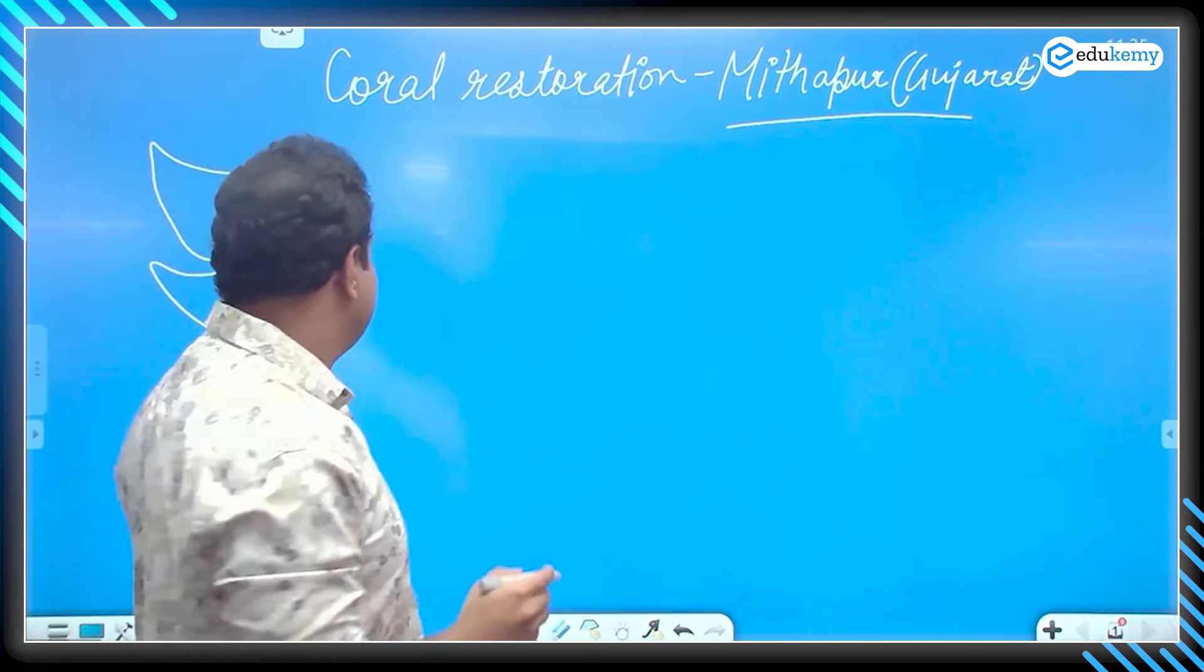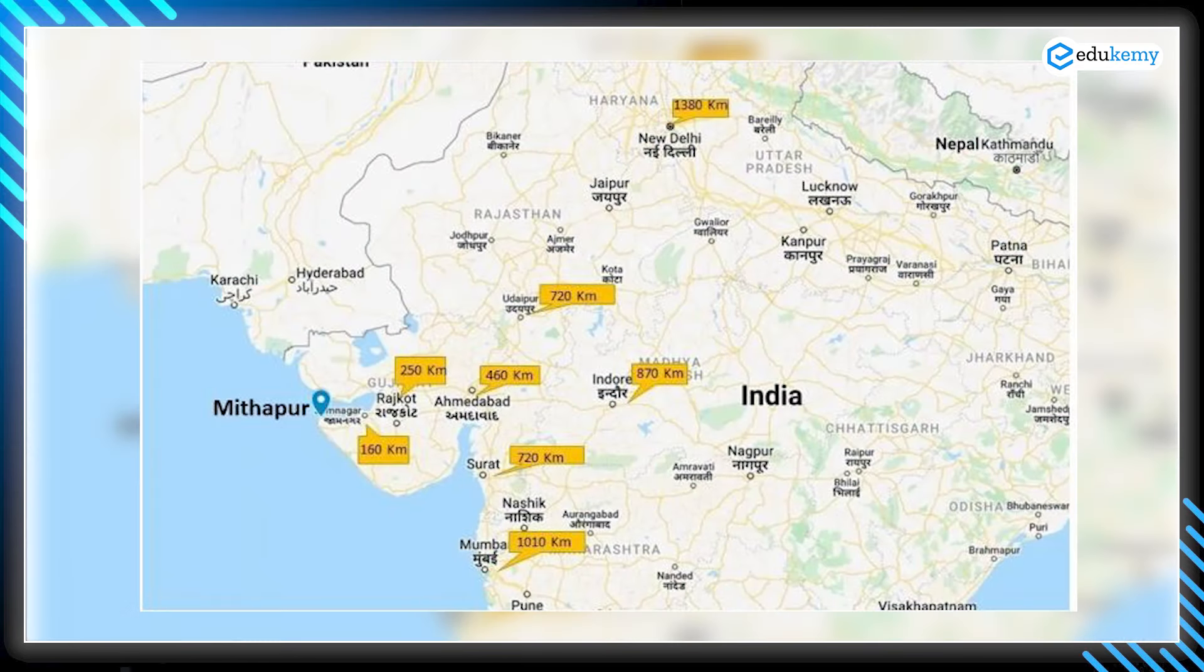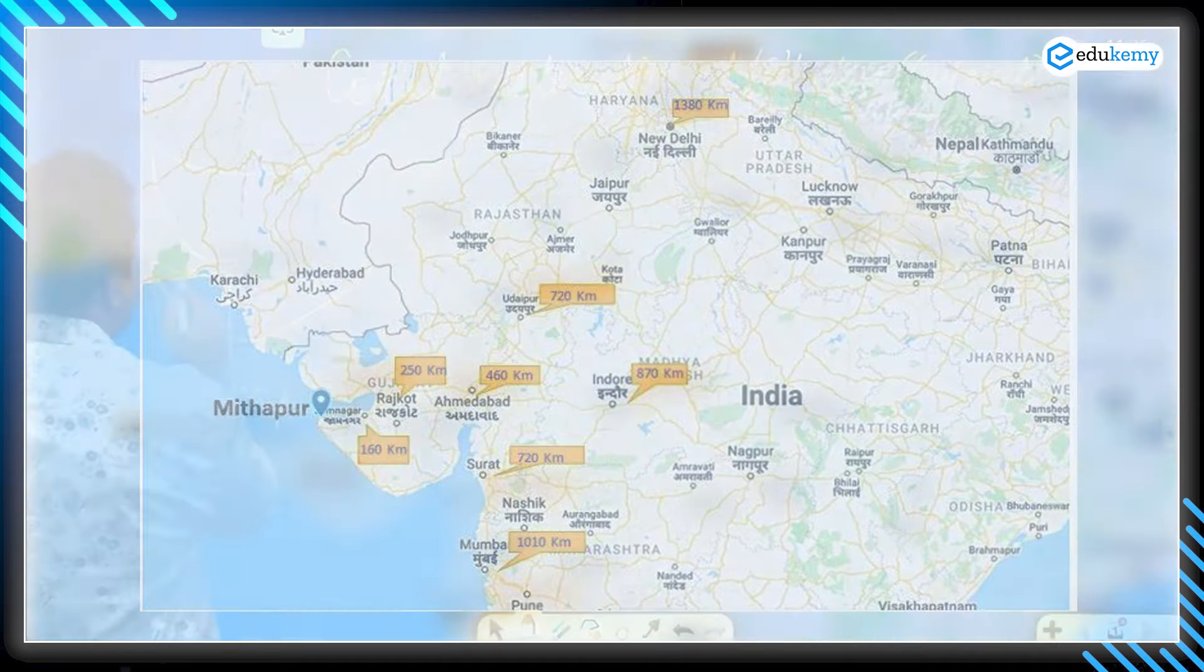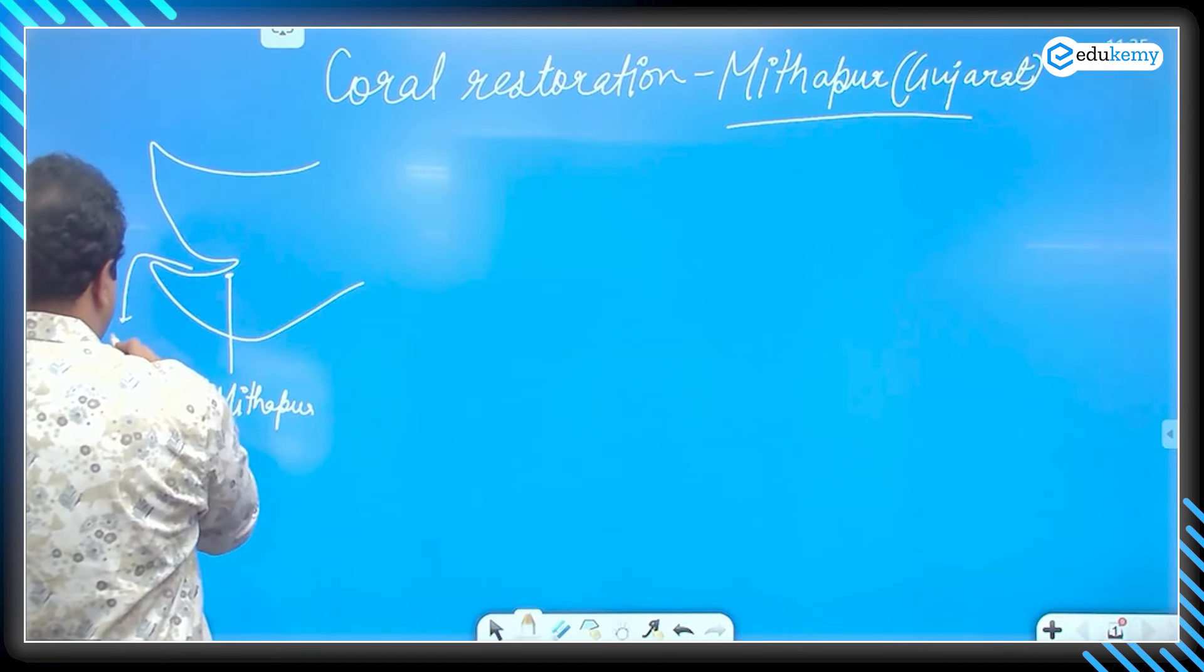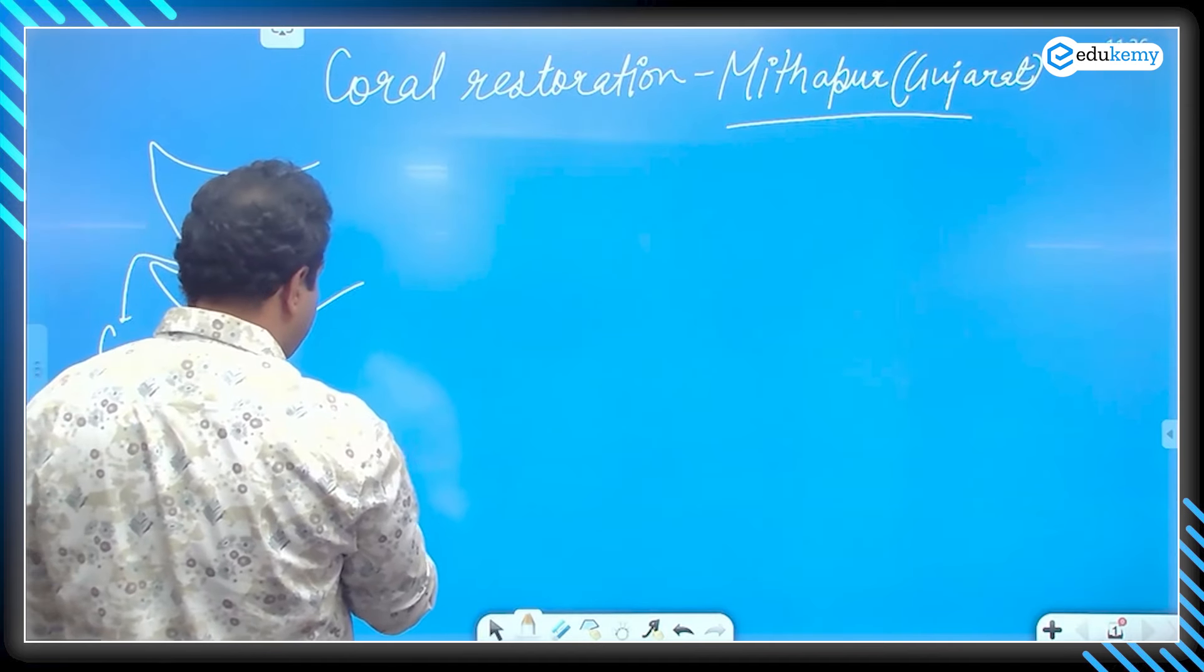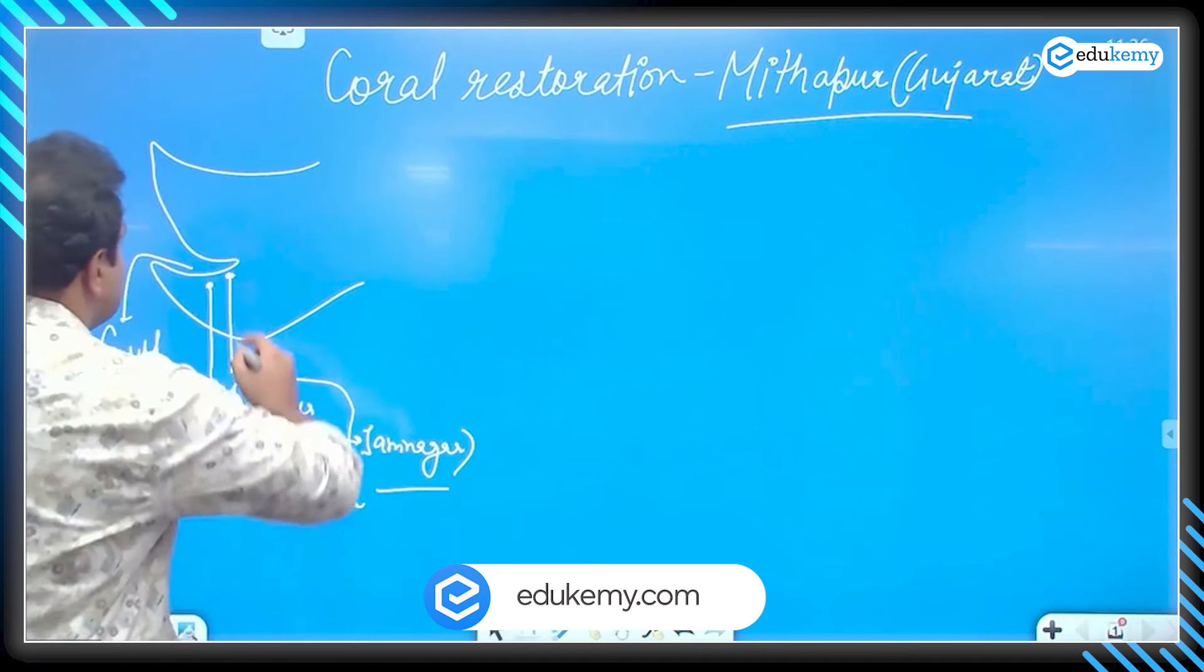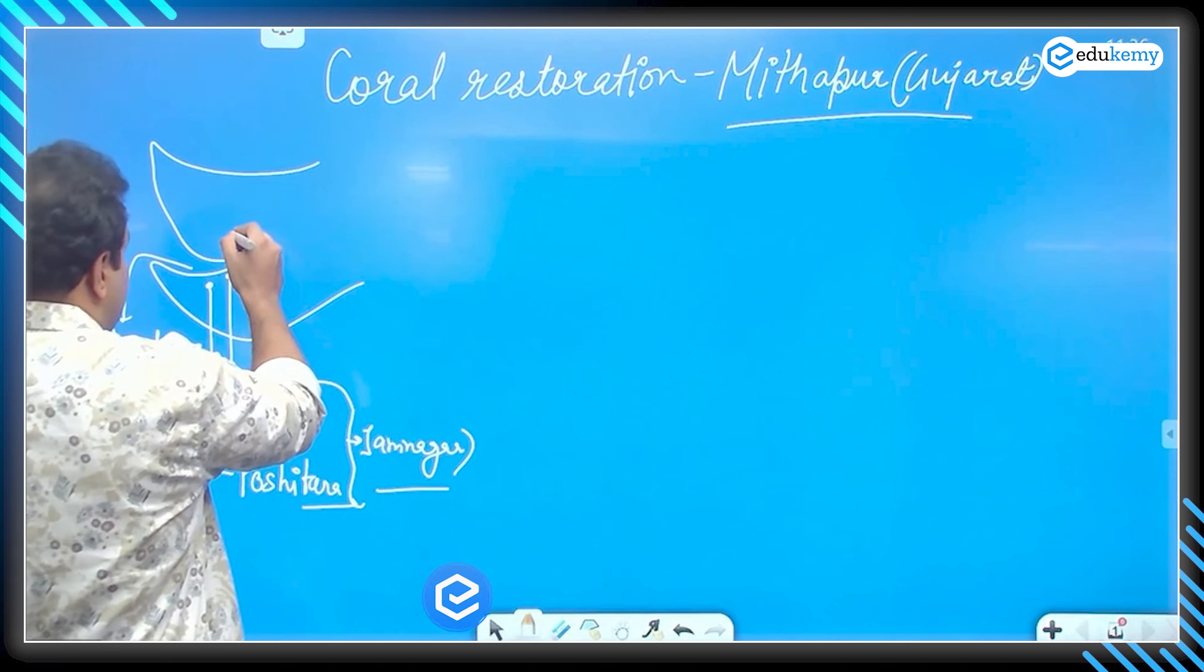In Gujarat, there is a place, a small village type area, it is Meethapur. And this is Gulf of Kutch. Here is Poshitara. They both are in the Jamnagar district of Gujarat. Two or three rivers are here also.